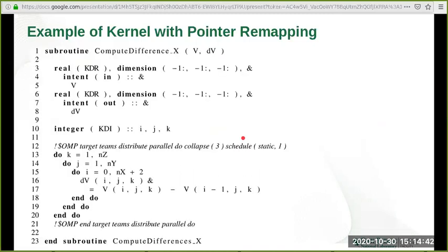On this slide, we see the content of the subroutine compute_differences_X called with V and dV as its arguments. Again, I want to note that the only change to this subroutine to offload it to GPU is the addition of the OpenMP target directive. Also note here that there is no explicit mapping clause needed, nor is there any implicit data movement during kernel execution.